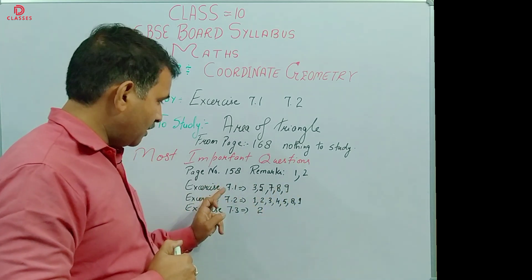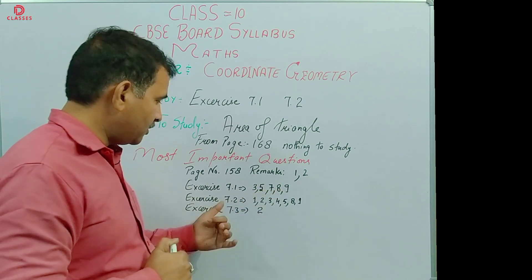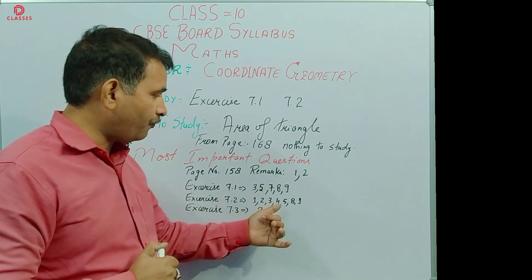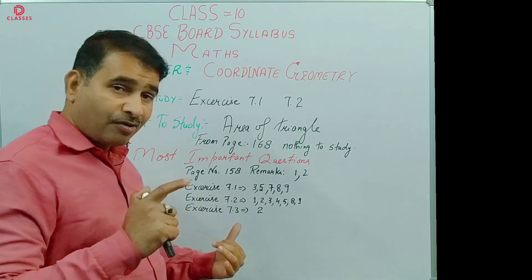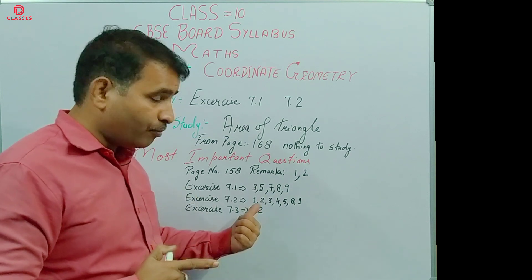Then Exercise 7.1: 3, 5, 7, 8, 9. Exercise 7.2: 1, 2, 3, 4, 5, 8, 9. And Exercise 7.3, question number 2.